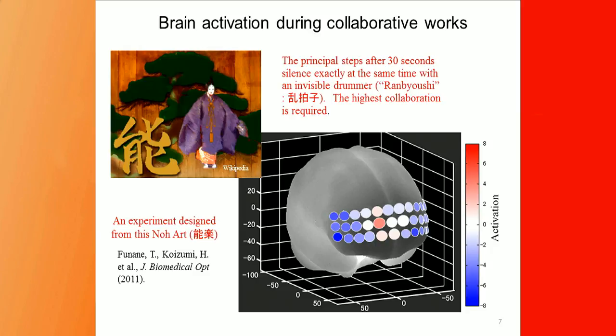We also applied this method to brain activation during collaborative works. The task involves performers playing after 30 seconds of silence — exactly at the same time, with an invisible drummer. It's very difficult to complete 30 seconds of silence while remaining synchronized with someone invisible, but performers have to do that. We simulated this case using optical topography and published the results.